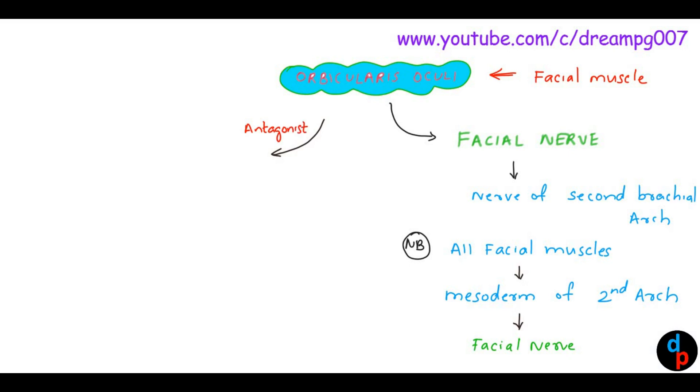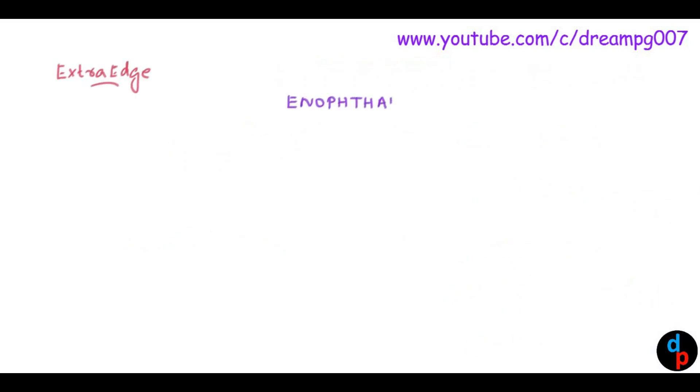Muscle which have antagonistic action to orbicularis oculi is levator palpebrae superioris. Levator palpebrae superioris is supplied by oculomotor nerve, that is the third cranial nerve. Let's have some more points.